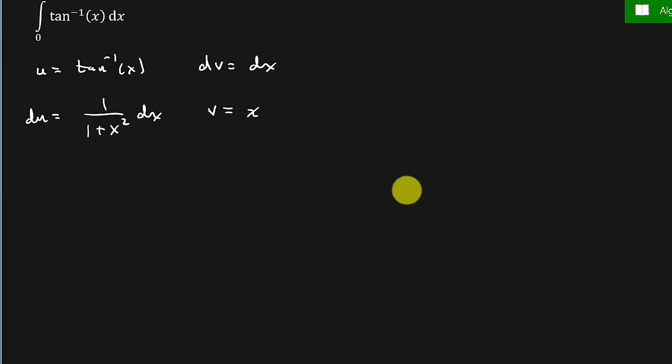All right, and so integration by parts is going to be u times v. So that's x times inverse tangent x, and we're evaluating that from 0 to 1, minus this times this, du times dv, minus the integral 0 to 1 of x over 1 plus x squared dx. You've got to multiply those two.